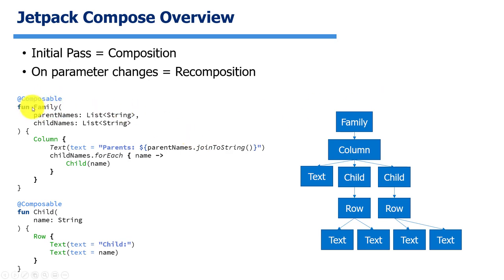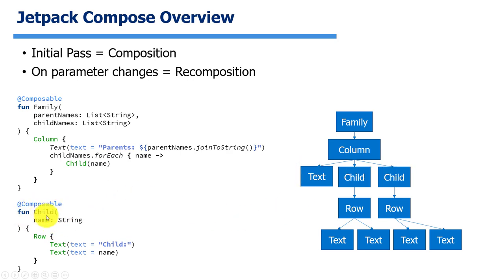In this example, we have a family composable function that creates a family node. Underneath that, it calls the column composable function, creating another node. Inside that column, we call text, creating a text node. Then for each of our children, using a loop, we call child — so if we have two children, the child function is called twice. Each child calls row, creating row nodes, and underneath each row are two text nodes. So just by having normal function calls, we're creating a tree to represent our user interface behind the scenes.